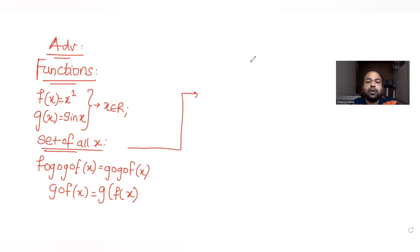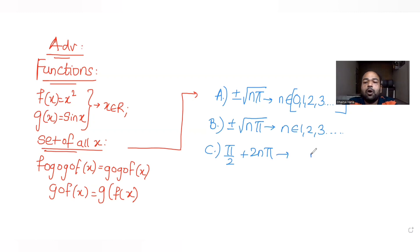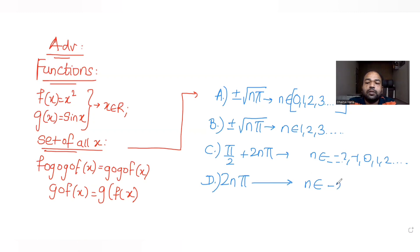The options given to us are: Option A — x = ±√(nπ) where n belongs to the whole numbers. Option B — x belongs to the natural numbers. Option C — x = π/2 + 2nπ where n belongs to the integers. Option D — x = 2nπ where n belongs to the integers.